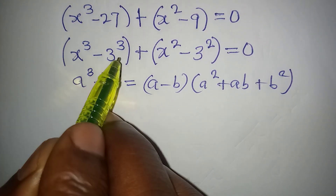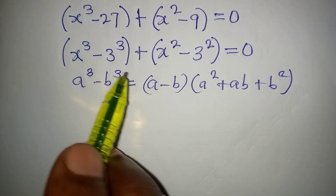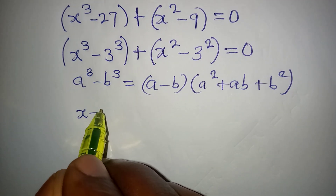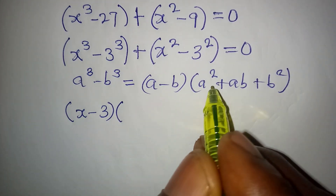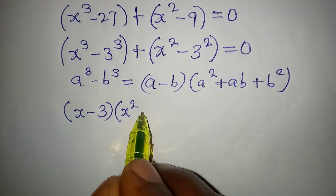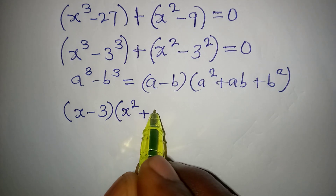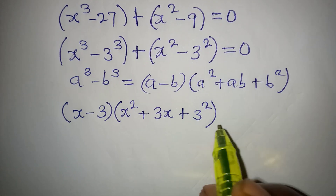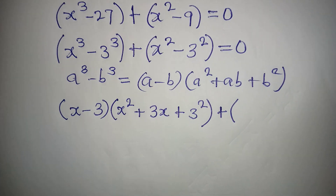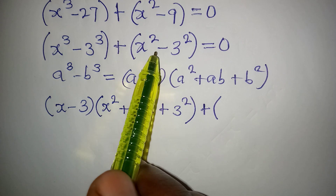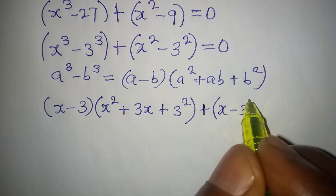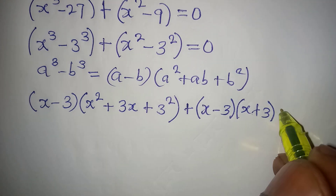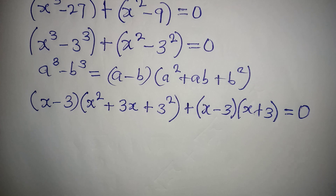With a = x and b = 3, we get (x − 3) times (x² + 3x + 3²), then plus applying the difference of two squares to the second bracket gives (x − 3)(x + 3). Everything is equal to zero.